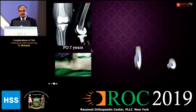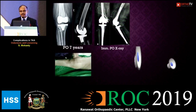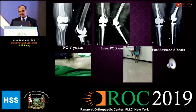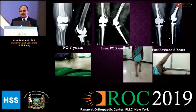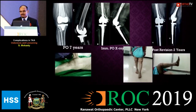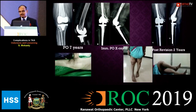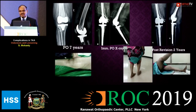The knee was revised and converted to a hinge-type knee. This is a two-year follow-up of the patient showing a stable, well-aligned knee with a function of about 110 to 120 degrees of flexion with active extension.